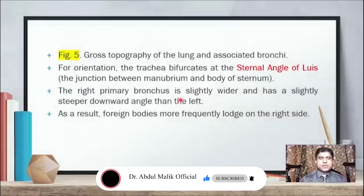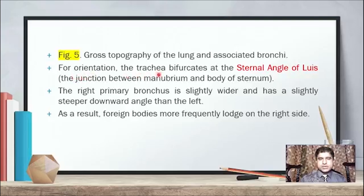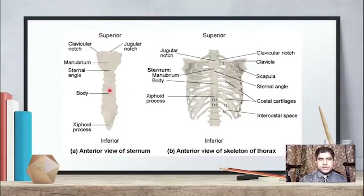After that we have figure 5 — gross topography of the lung and associated bronchi. To understand orientation, the trachea bifurcates as you come down from it. Bifurcation occurs at the sternal angle of Lewis — the junction between the manubrium and the body of the sternum. This is the interior view of the sternum; at the top are the clavicular notch attachments, and at the sternal angle is where the bifurcation takes place.